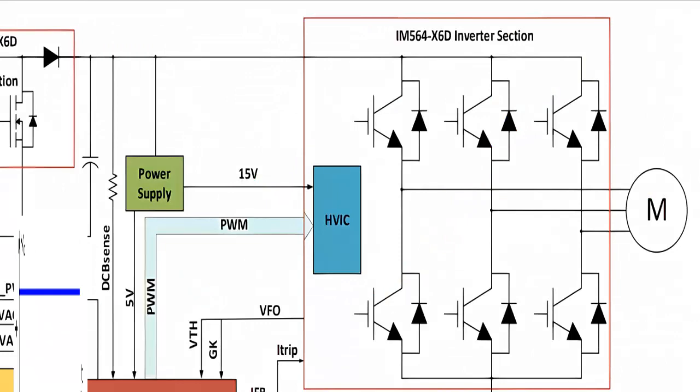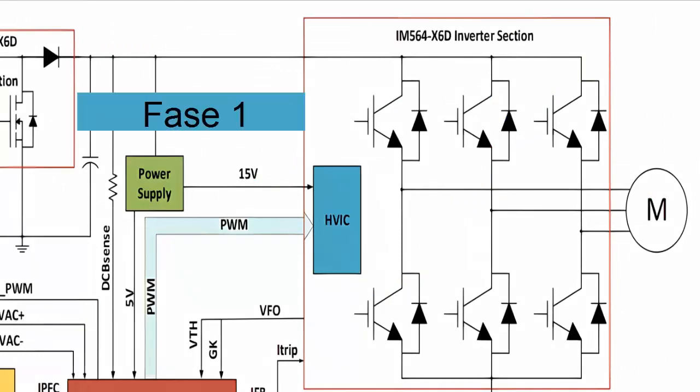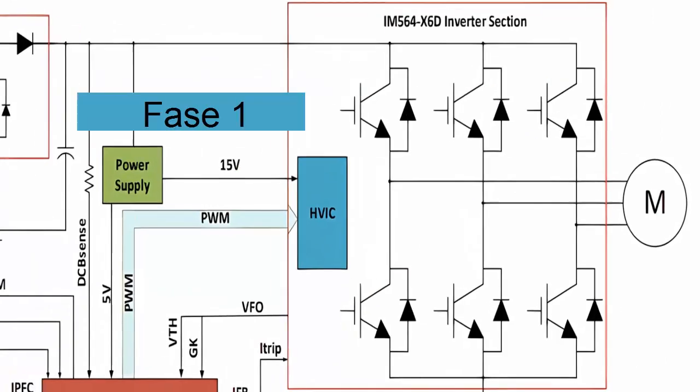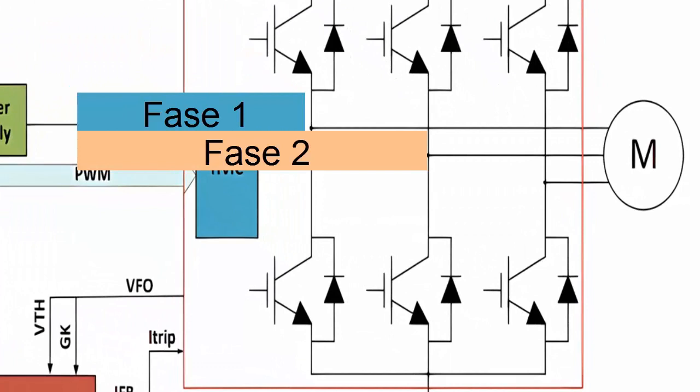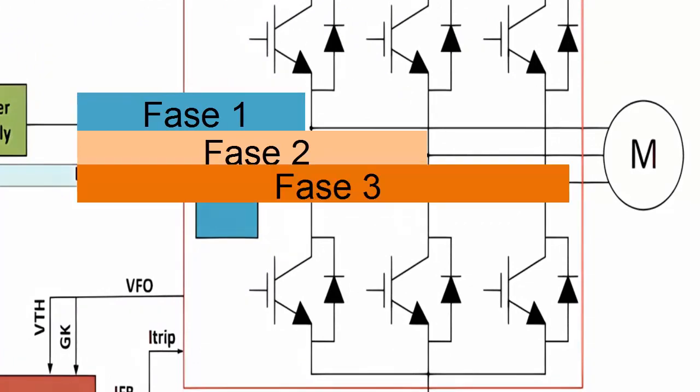To achieve the conversion to three-phase current, this direct current is supplied in three different ways and in two opposite directions. To achieve this, six IGBT-type transistors are fed, arranged in pairs to allow manipulation of the current direction with the following numbering.